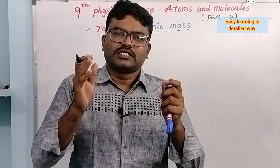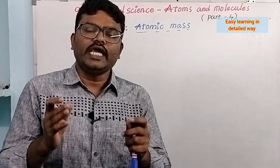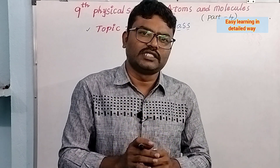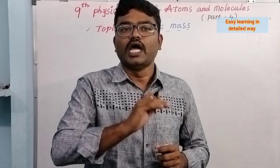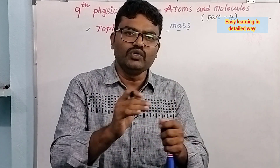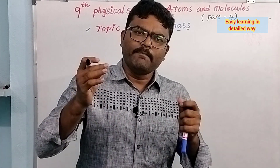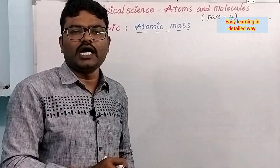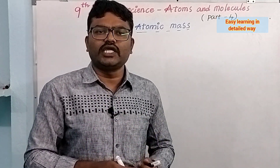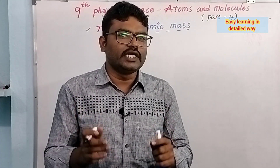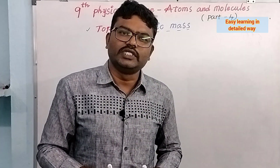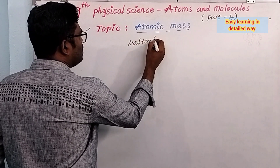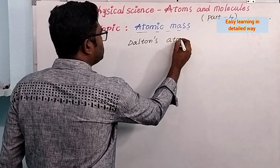How do we find the mass of these atoms? Because they are very tiny particles, scientists have taken the relative masses. What does it mean — the relative mass of an atom? How do we find these relative masses? Basically, atomic mass — Dalton's atomic theory is very significant in determining atomic mass.